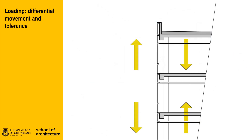Buildings also tend to move during their lifetime as a result of applied loads and changes to materials over time. The effect of these small movements are not always easy to see; however, small movement over time can result in significant facade failure if not accounted for. Typically a concrete building structure will settle and continue to shrink over time, while the external facade often expands and shrinks more dynamically as a consequence of applied forces and thermal expansion and contraction.